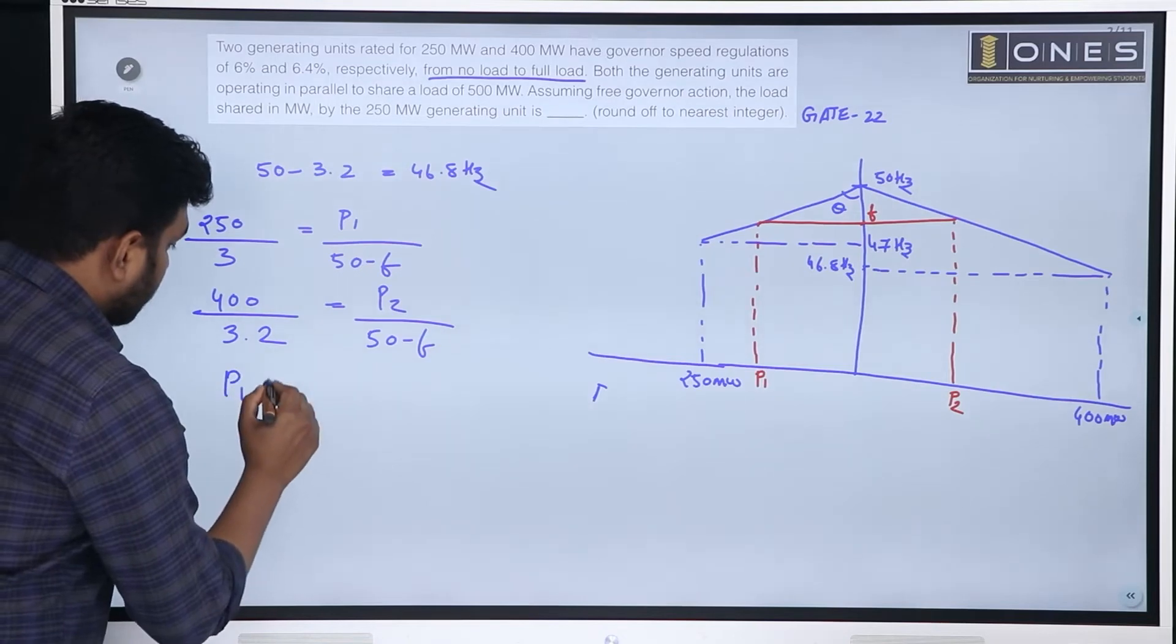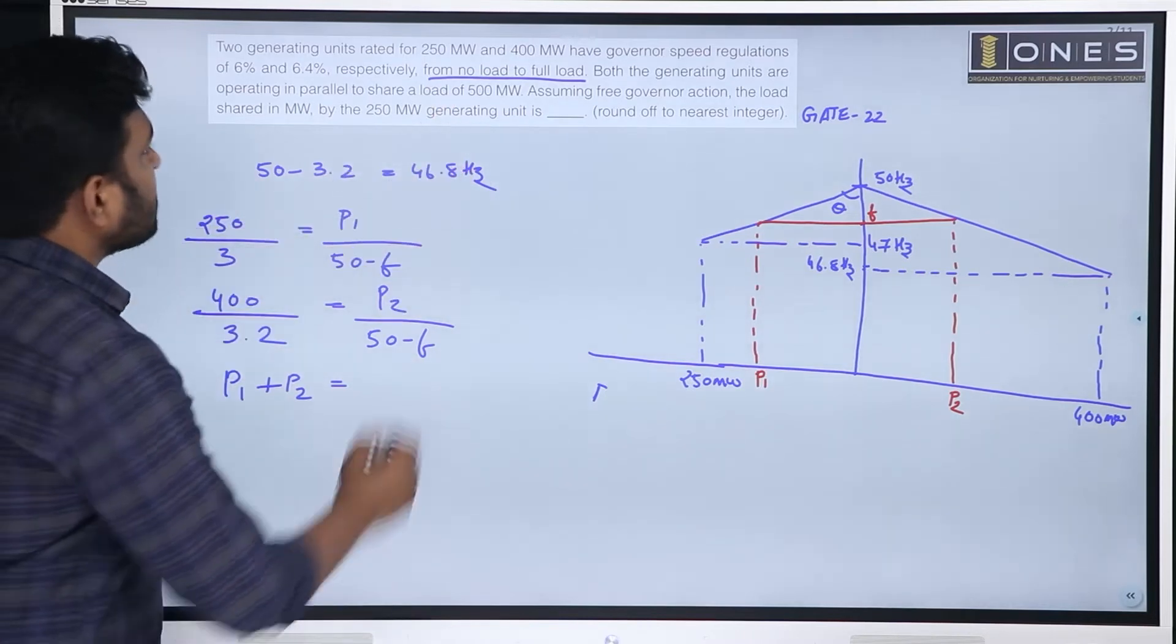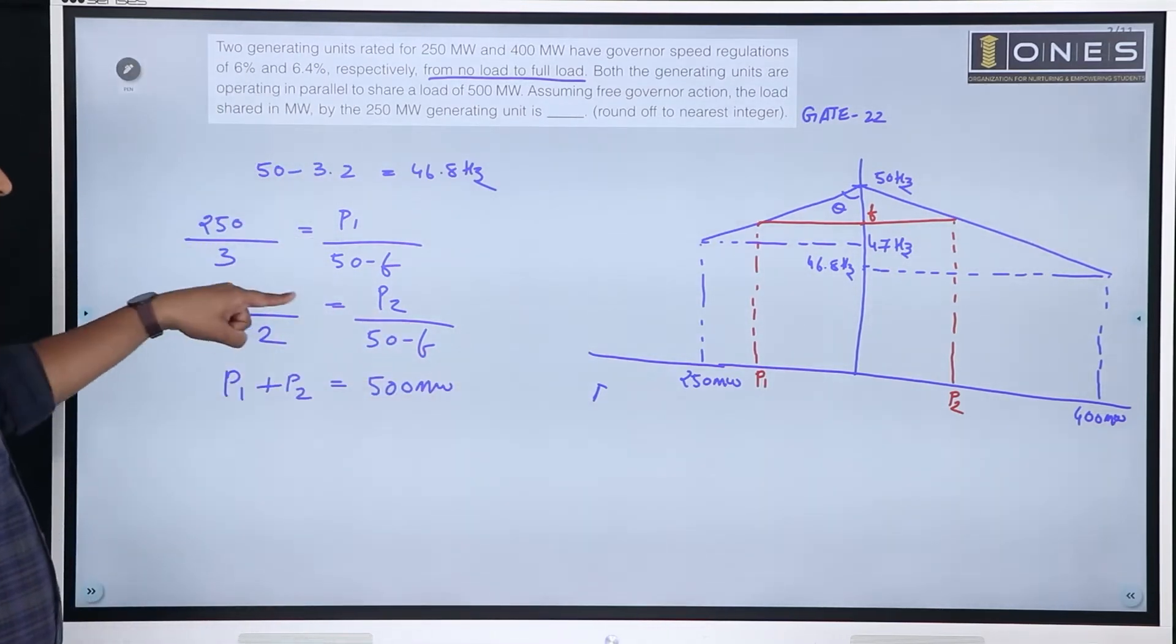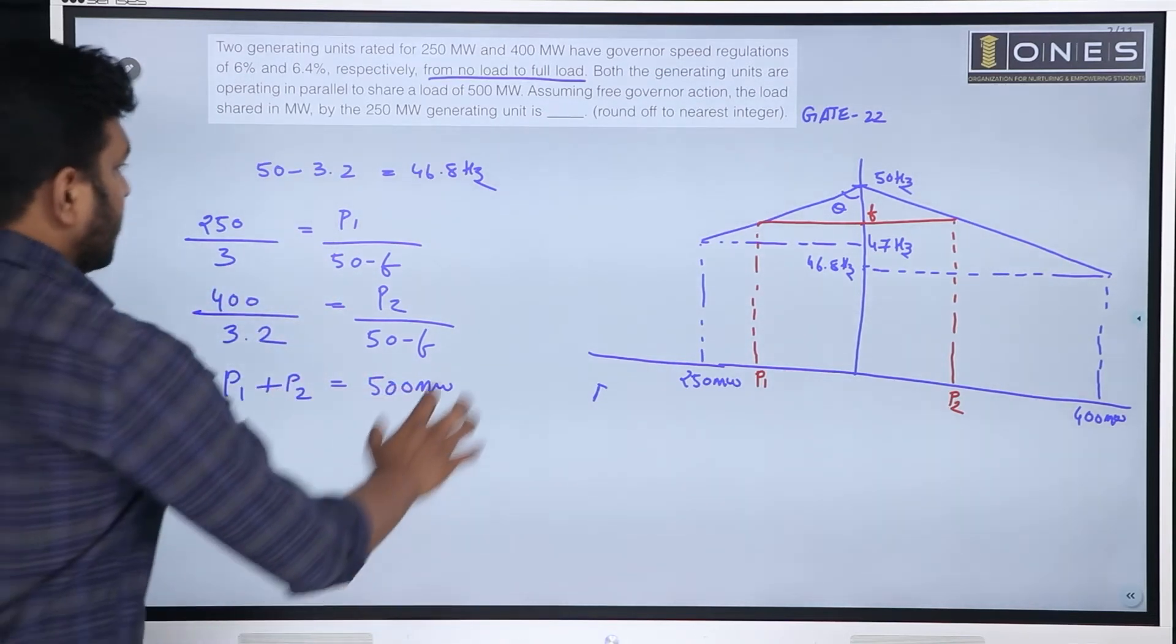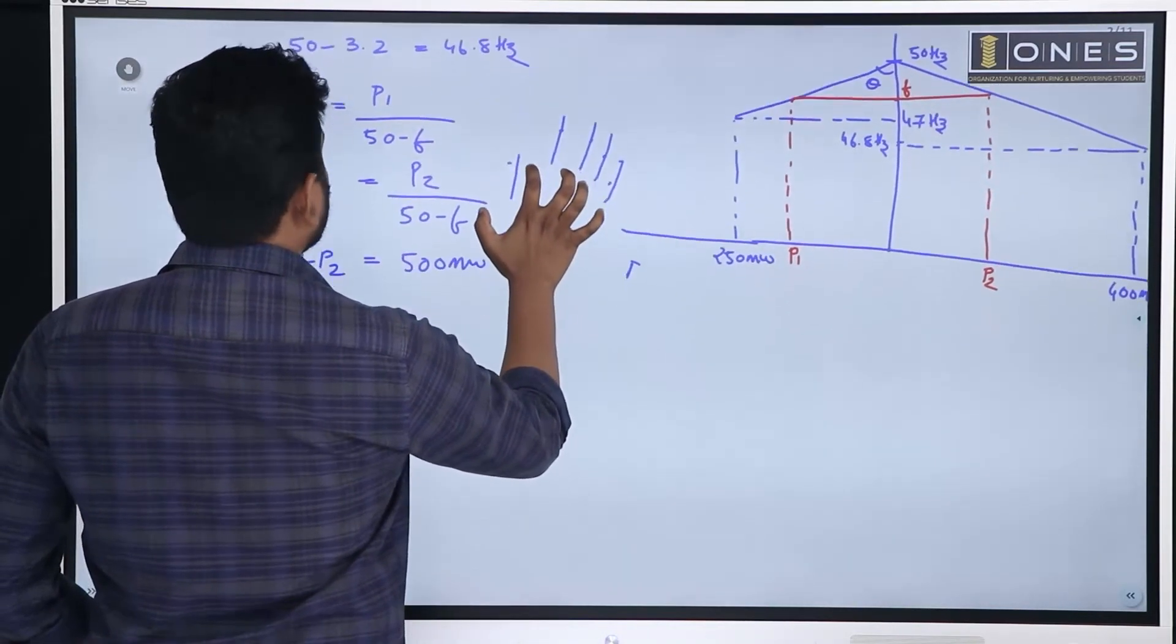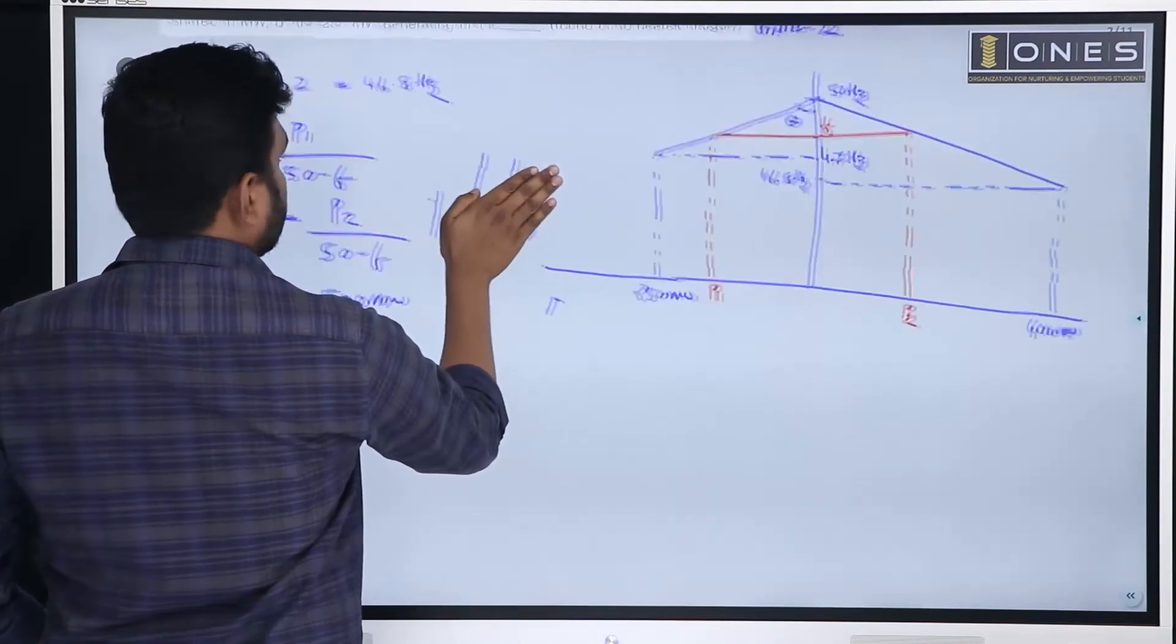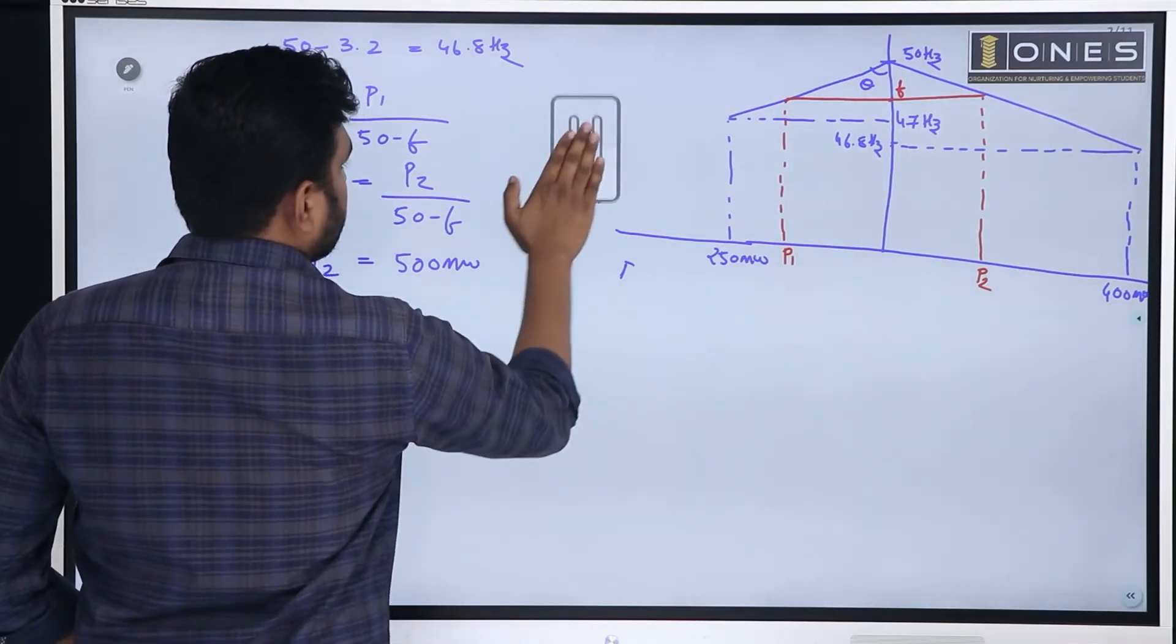And one equation: P1 plus P2 is equal to how much? 500 megawatt. So, 3 equations: equation number 1, equation number 2, and 3. 3 unknowns: P1, P2 and F. Now, just mathematics.